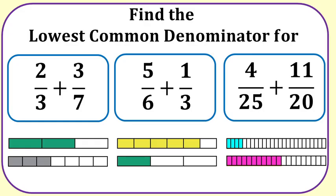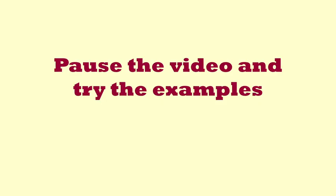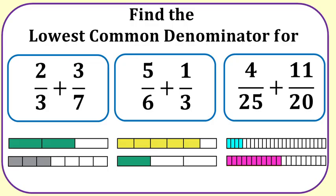Practice is really important — here are three more examples. Find the lowest common denominator for each of the pairs of fractions: two thirds and three sevenths; five sixths plus one third; four twenty-fifths and eleven-twentieths. You need to pause the video and do these examples before proceeding.